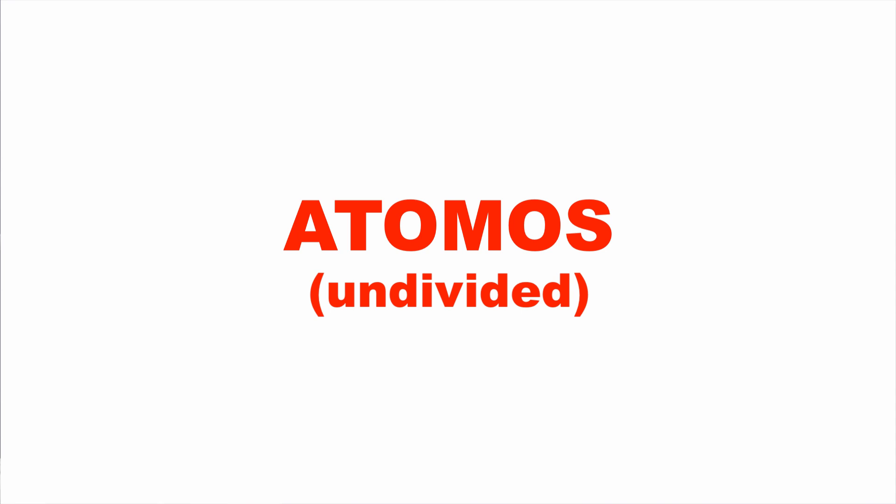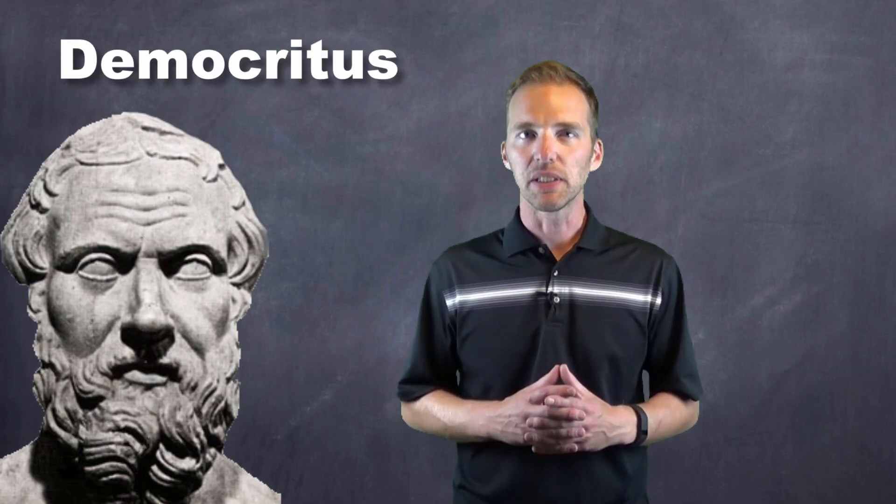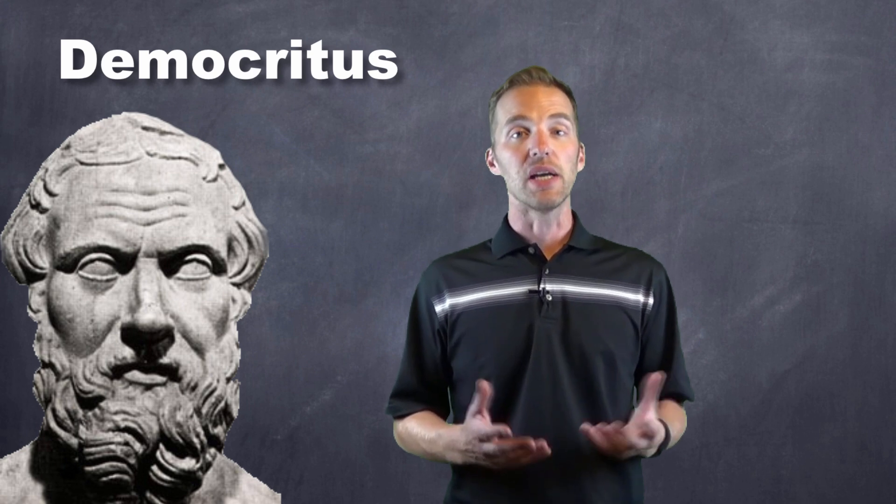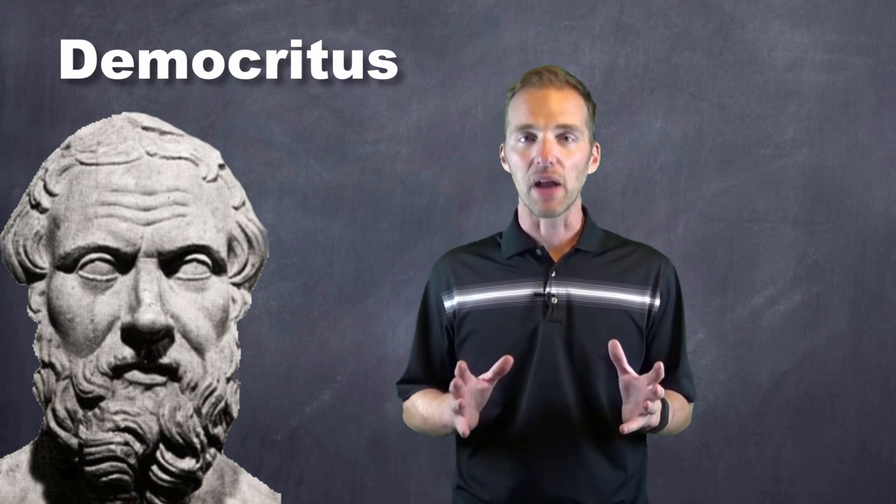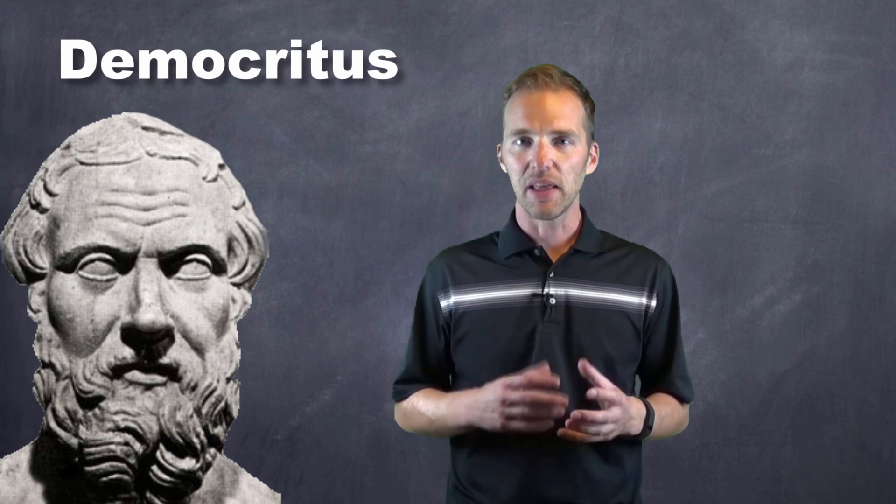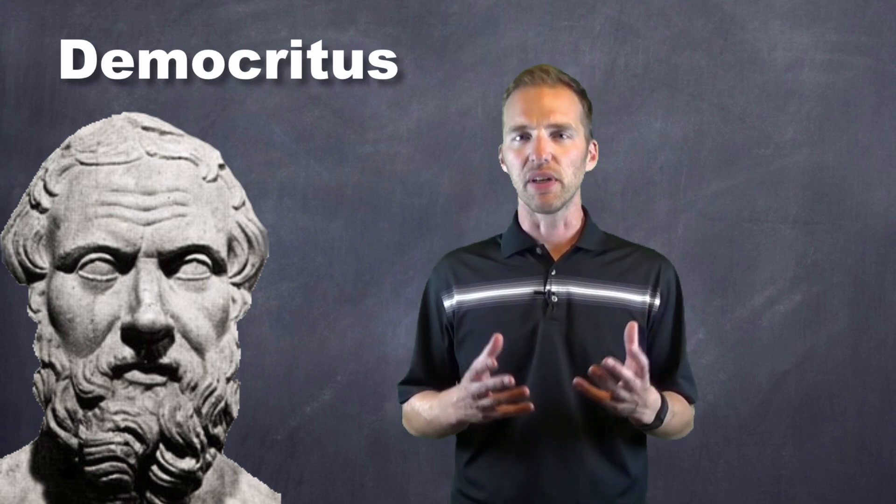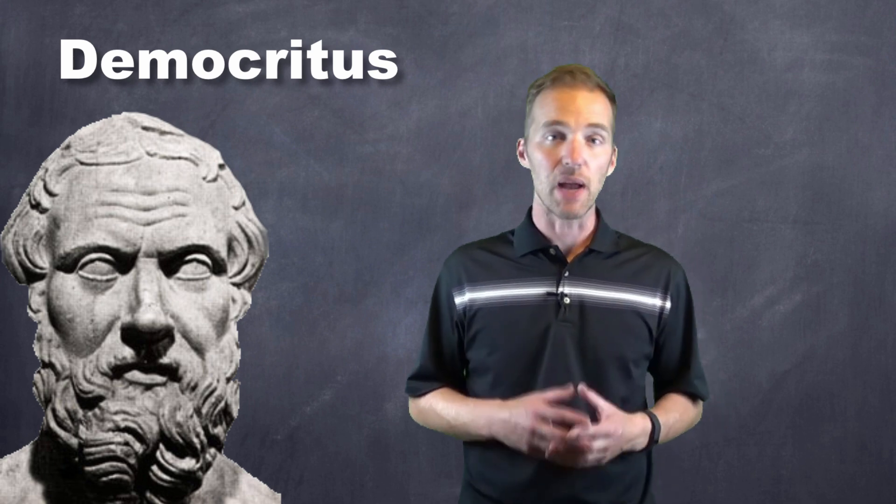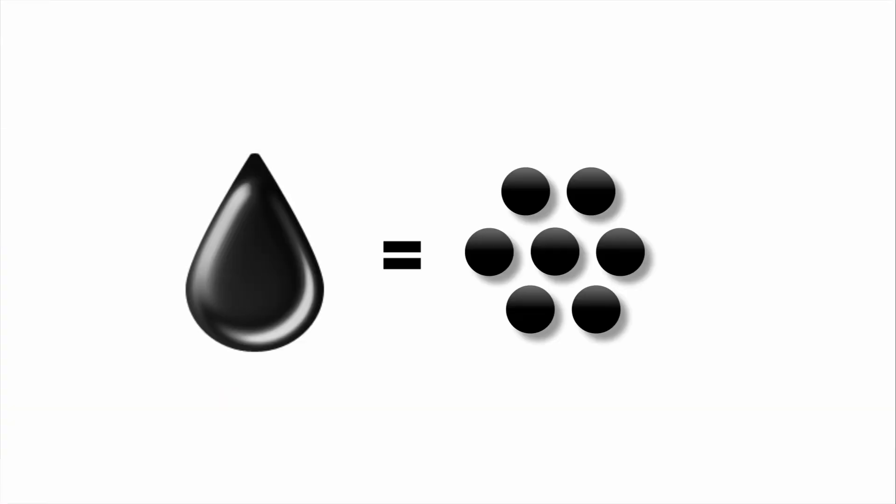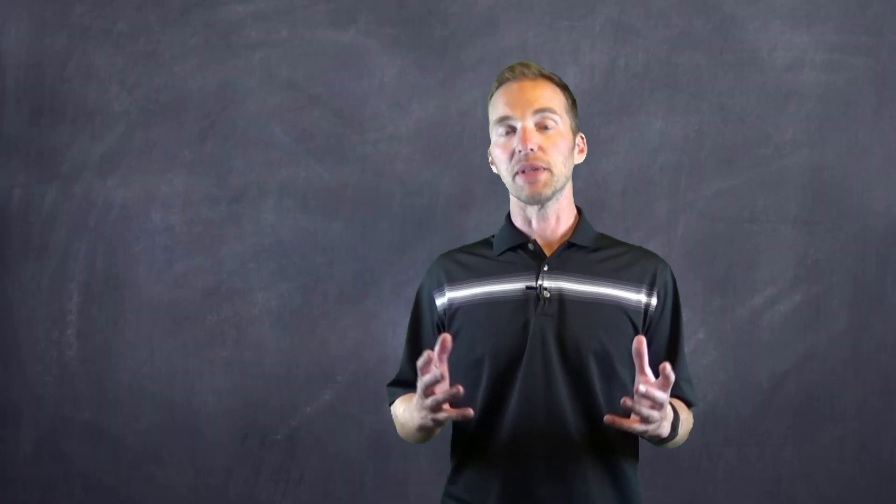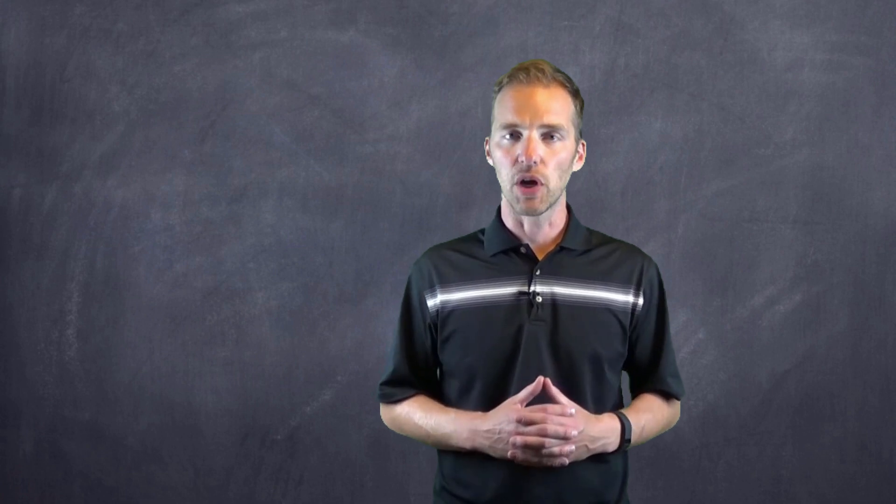Democritus coined the term atomos. And what he theorized, because really science was just based on theory at that point, was that all matter was made up of these tiny, indivisible particles. And that these particles were all different, and they retained the properties of the substance that they were meant to describe or be a part of. So things like oil would be really slippery spheres that could slide over one another. Prior to this, things were thought to be made up of the four elements and just varying compositions of those.